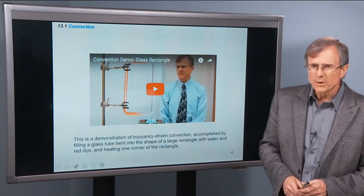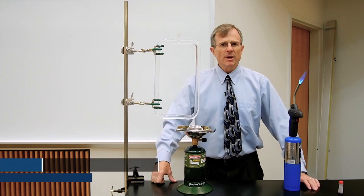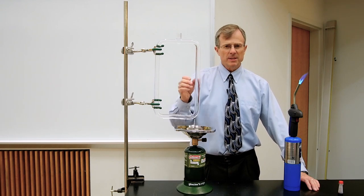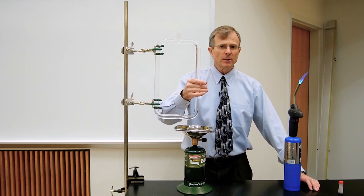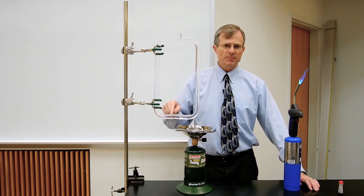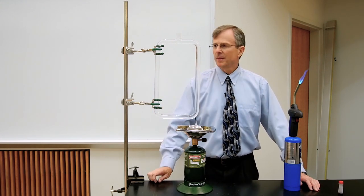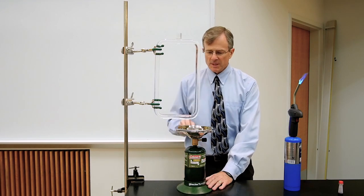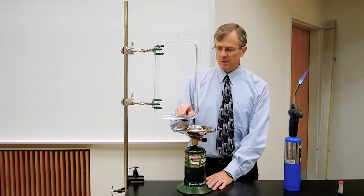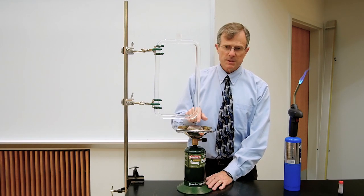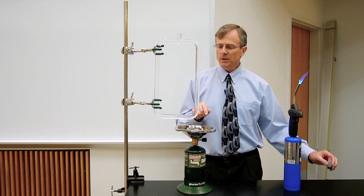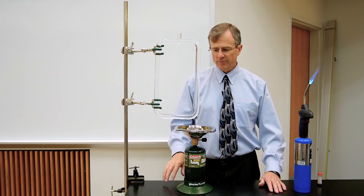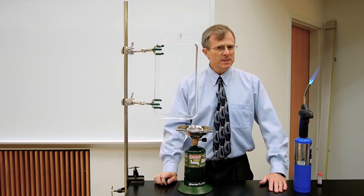A little demonstration of buoyancy-driven convection. This is a demonstration of convection. I have a tube that has a circular cross-section and it's shaped in the shape of a rectangle. It's filled with water. I filled it from the top here. I'm going to heat the corner of this rectangle here with this burner and add a little bit of dye so you can see the motion of the water during the convection. This is buoyancy-driven convection.